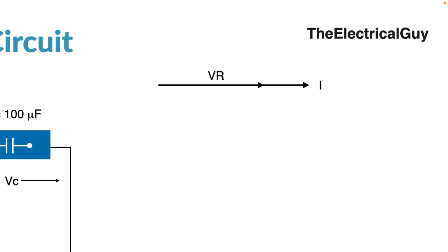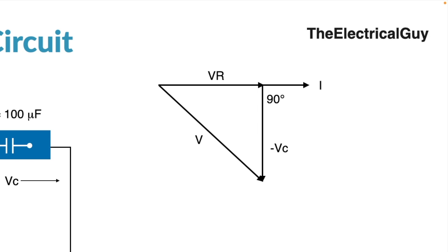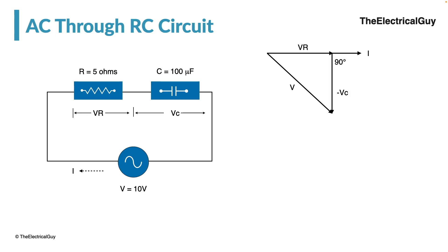Coming to the capacitor — in a capacitive circuit the voltage lags behind the current by 90 degrees, and as a result the voltage drop VC also lags behind the current by 90 degrees. We represent it as negative because the voltage is lagging the current by 90 degrees. In an inductive circuit it was leading and hence represented by a positive value, but for capacitive circuits always remember we use a negative value, so negative VC lags 90 degrees. V is the summation of VR and VC, giving the total voltage of the circuit.